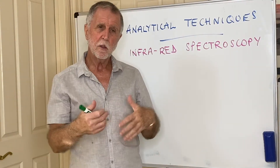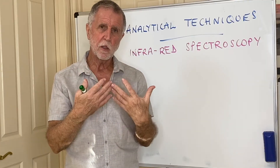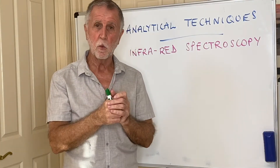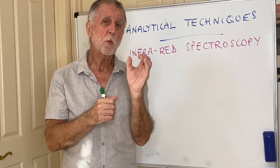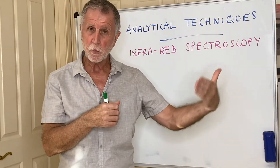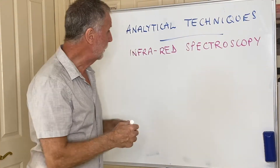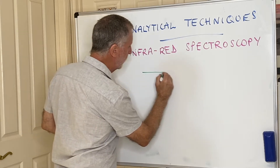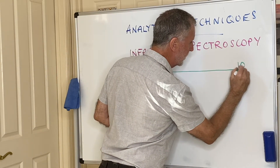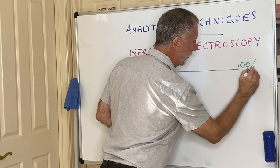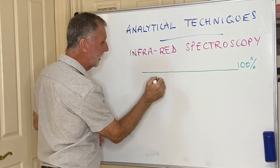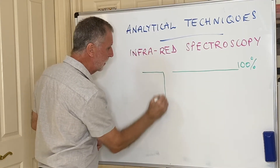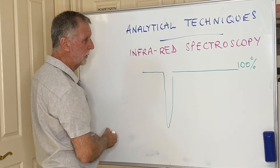Those stretching and bending energies coincide with infrared radiation, so when a molecule receives infrared radiation the bond may stretch or bend a bit more, and that is detected in the infrared spectrometer. The spectrometer measures transmittance — starting at 100% — and where a particular bond absorbs that radiation, a dip is observed in the spectrum.